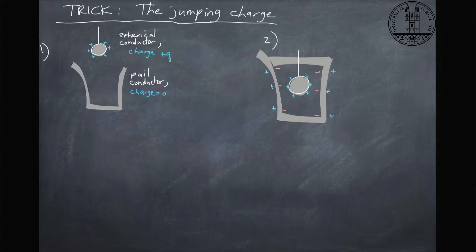So in step two as we put this charged object inside this conducting pail, charge will be induced inside the conductor. So negative charges will be attracted to this positively charged sphere and therefore that leaves positive charges on the outside of the pail. So these are the extra induced charges.